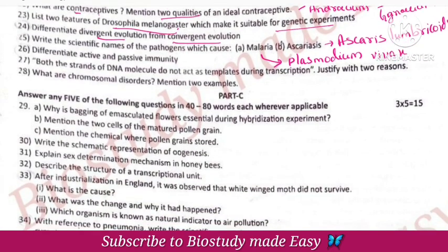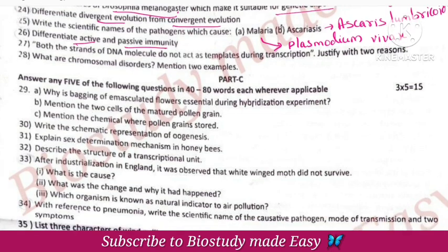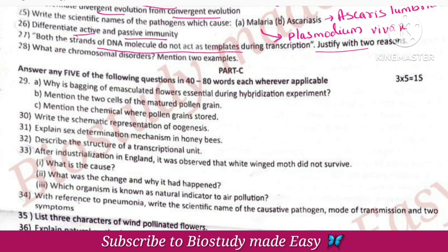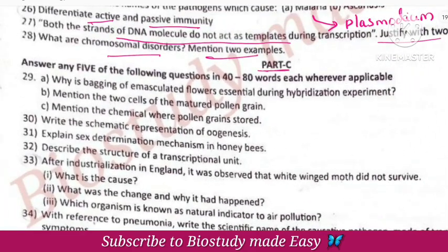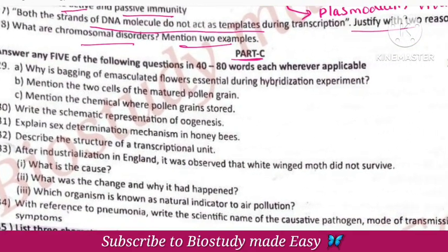Difference between active and passive immunity. Both strands of the DNA molecule act as template during transcription — two reasons for this. Chromosomal disorders examples: Down's syndrome, Klinefelter's syndrome, and Turner's syndrome.